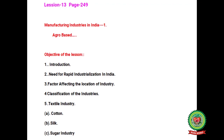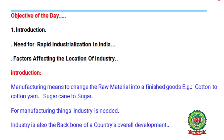Good morning students. Today we are going to study about the manufacturing industries of India — lesson number 13, agro-based industries, on page number 249 in your geography book. The objectives of this lesson are: introduction, need for rapid industrialization in India, factors affecting the location of industry, classification of industries, and other types like textile industry — cotton, silk — and sugar industry.